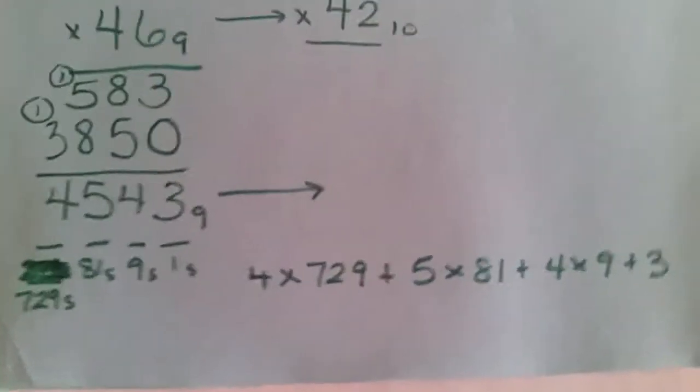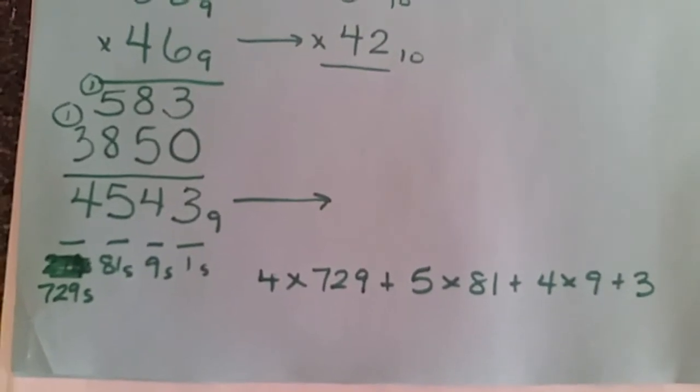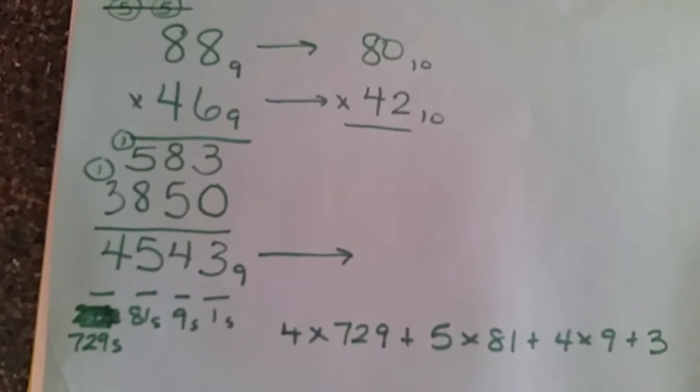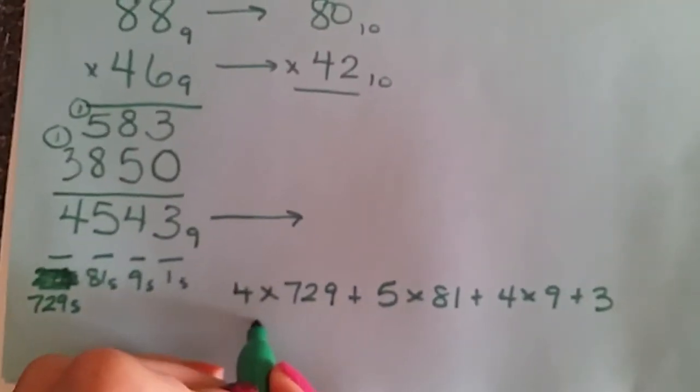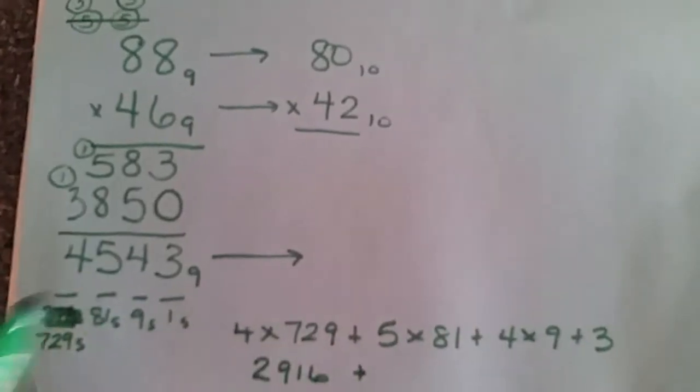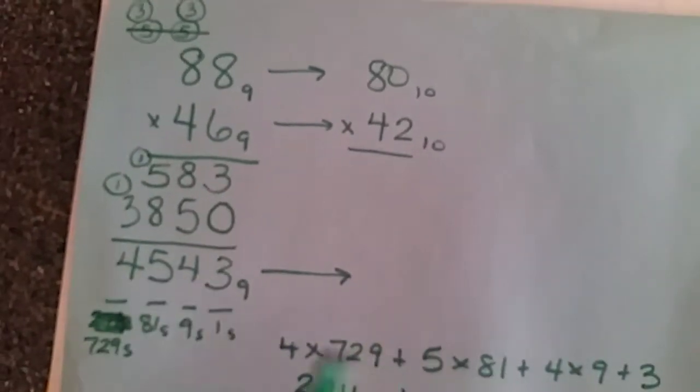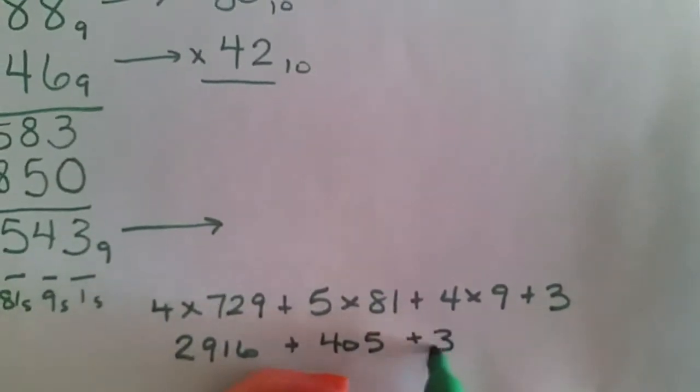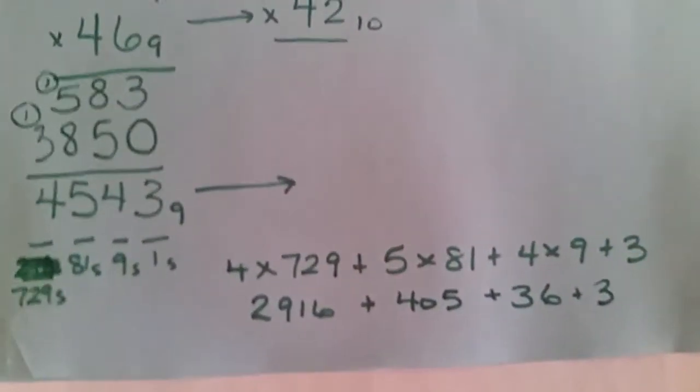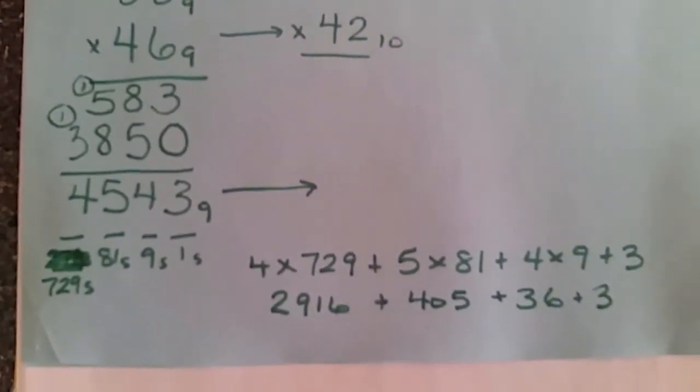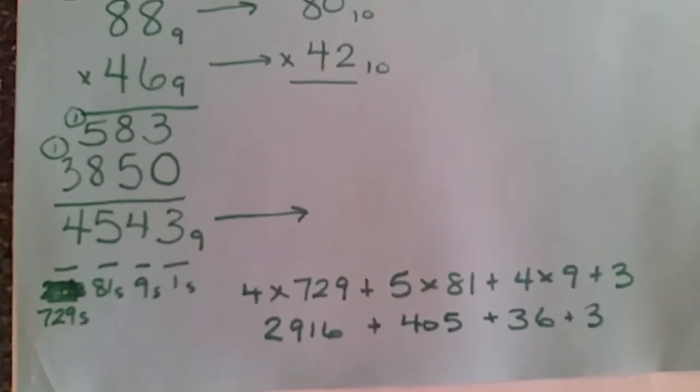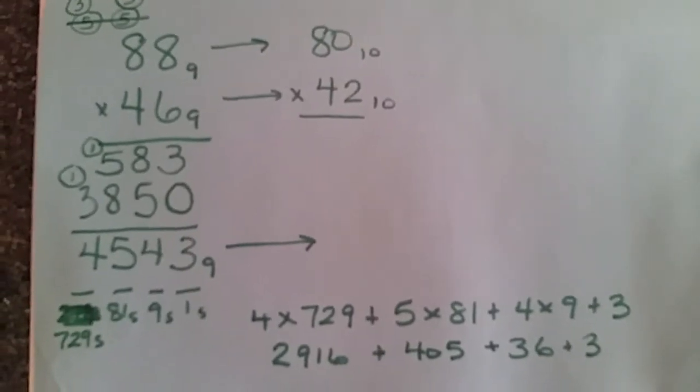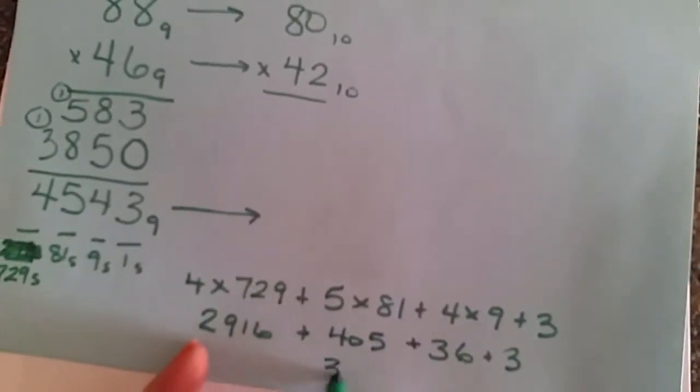I'm just going to go to the side on the calculator and figure out what that looks like. So 4 times 729 is 2,916. 5 times 81, that's 405. And then we've got 36 here and 3 more. So let's go ahead and put that all together.